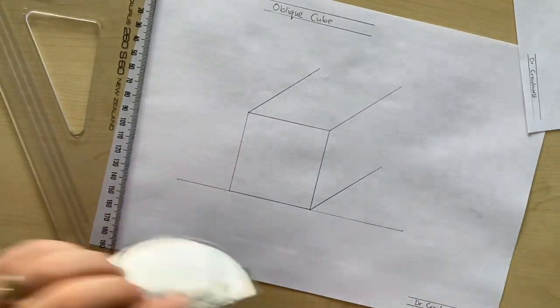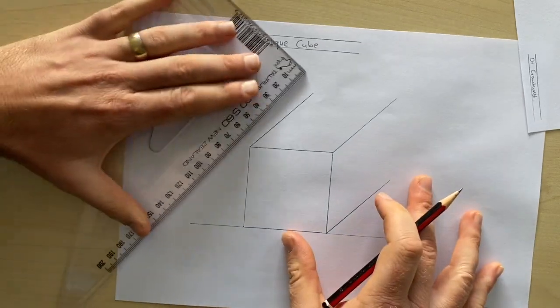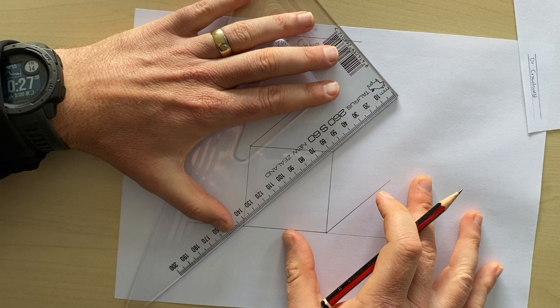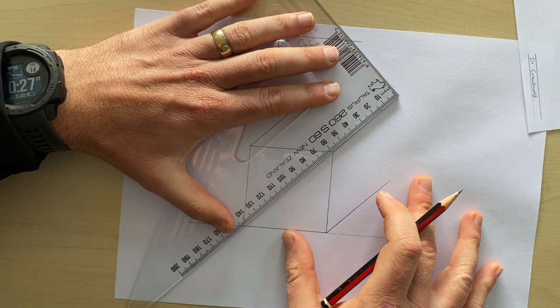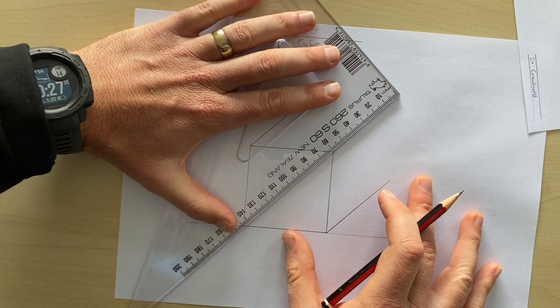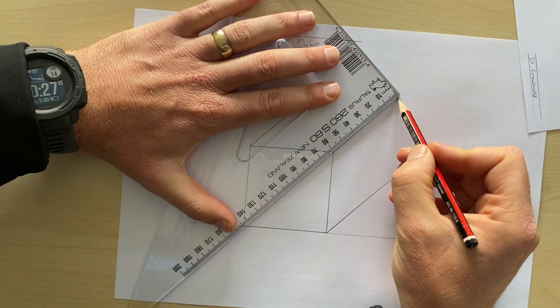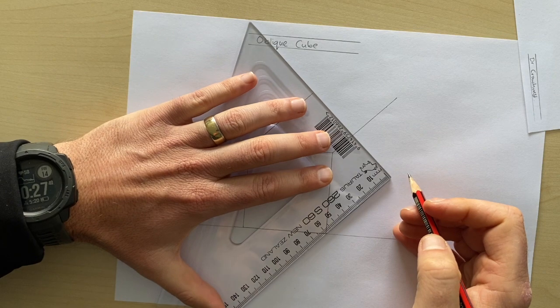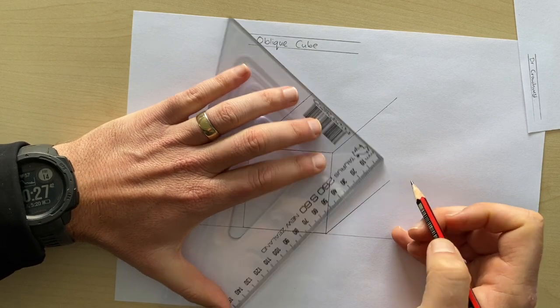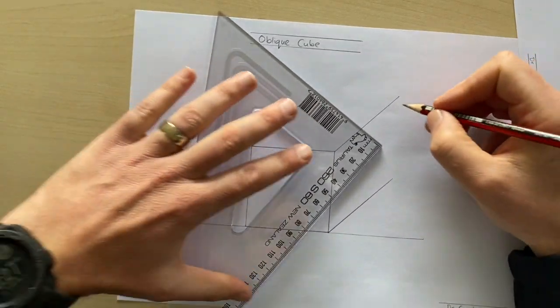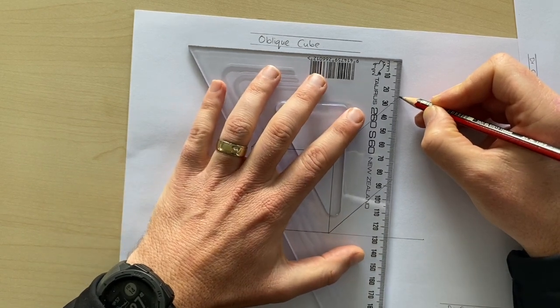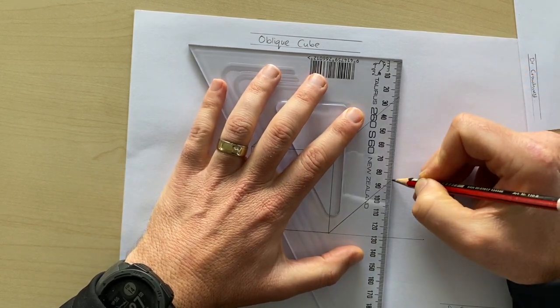You might want to now just check with your ruler that all those lines are six centimeters. I'll do that. Yes. Oh, that could do with an extra millimeter. Yes. And then I'm going to just put my point there, bring my ruler around and join that one up there.